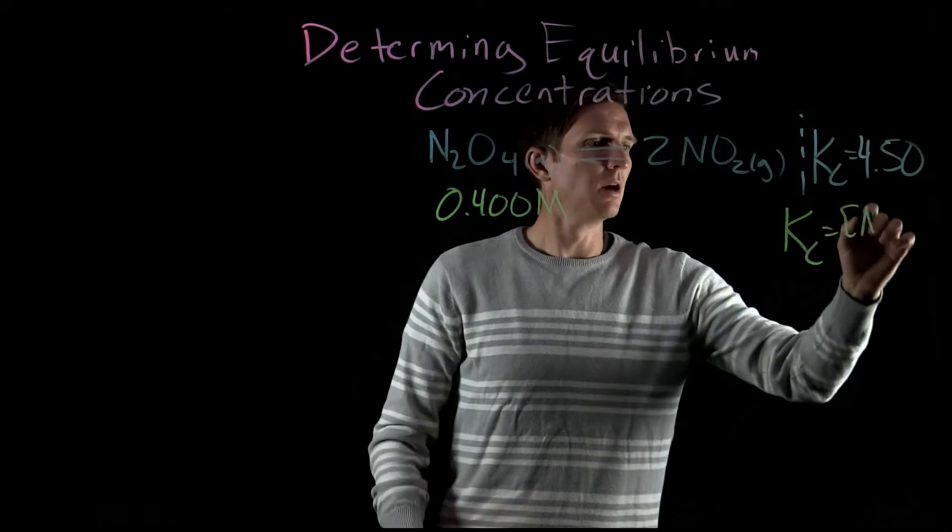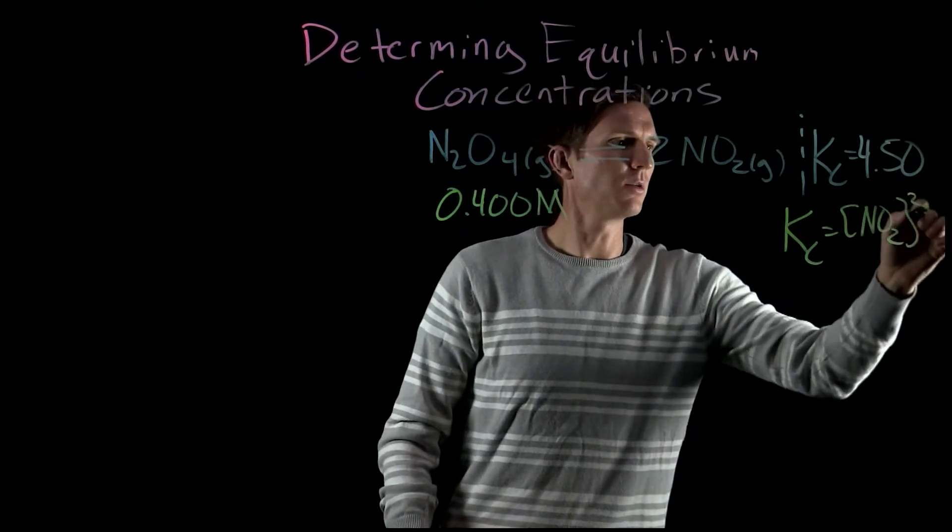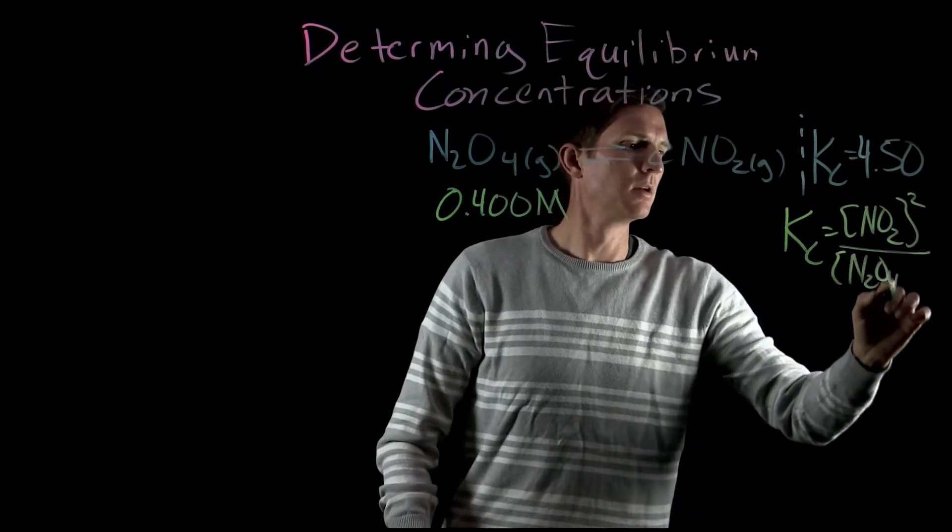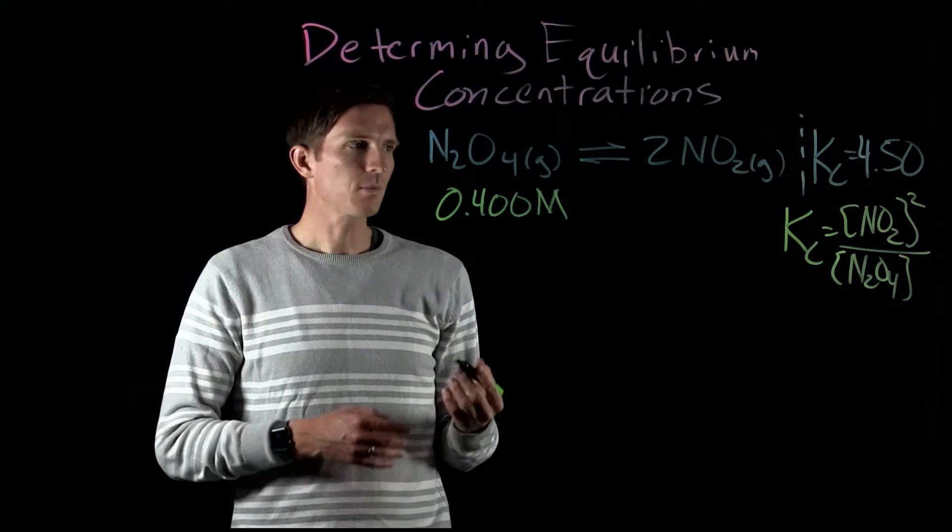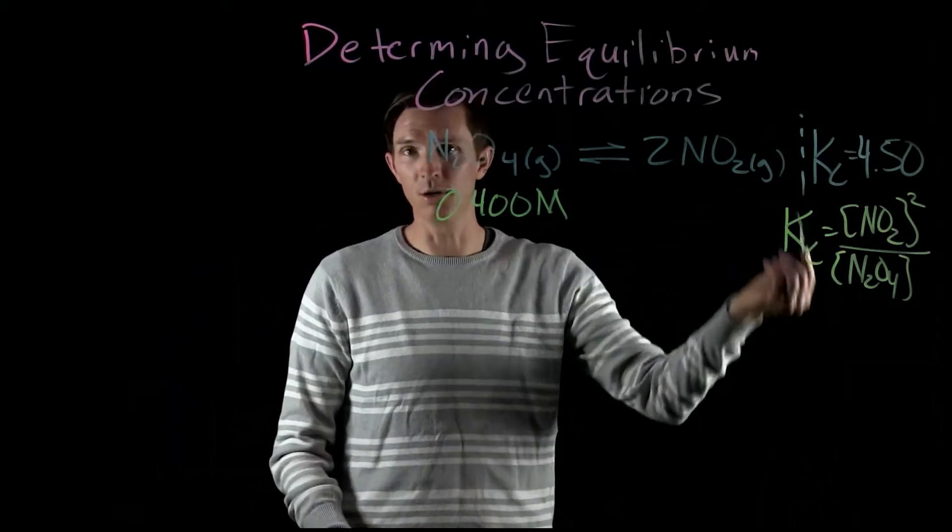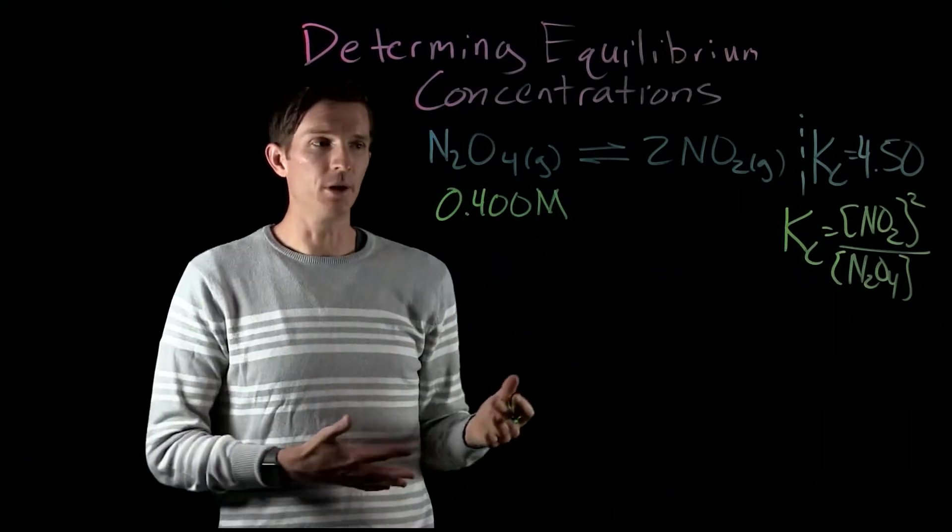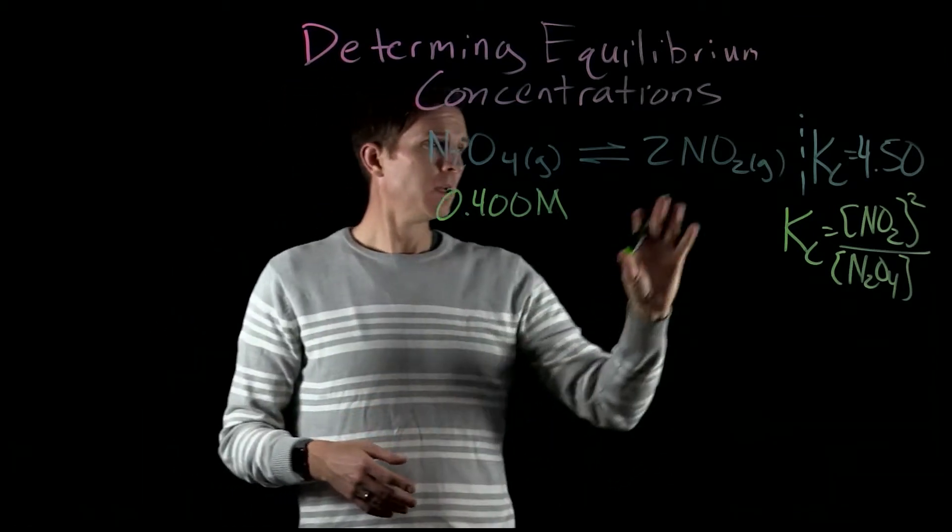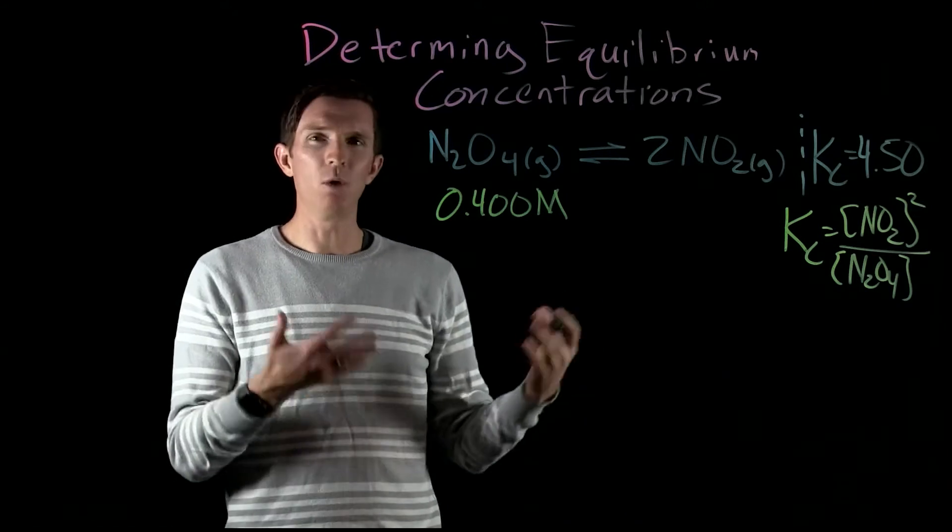And our Kc expression here would be our product concentration squared—right, because our coefficient is 2 here—divided by our reactant concentration to the first order. And so we know there's a distinct ratio between these at equilibrium.